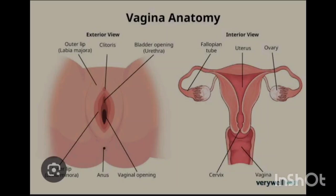Welcome to this lesson on the female reproductive system. We want to start by looking at the external female genitalia, then the internal female genitalia, and we are going to relate to the process of conception and gestation. In the process, we are going to correlate all these structures on how they appear on ultrasound.